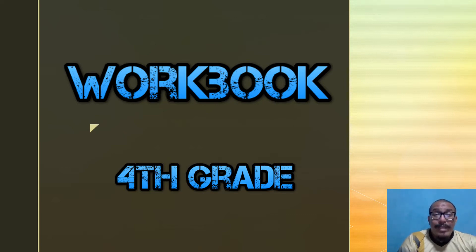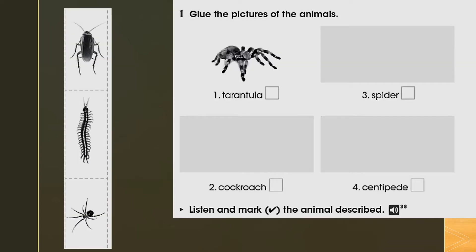Ok, let's go through the activities. In number one, it says 'glue the pictures of the animals here.' You need to cut out the figures — we have spider, cockroach, and centipede — and paste each one next to its respective name.